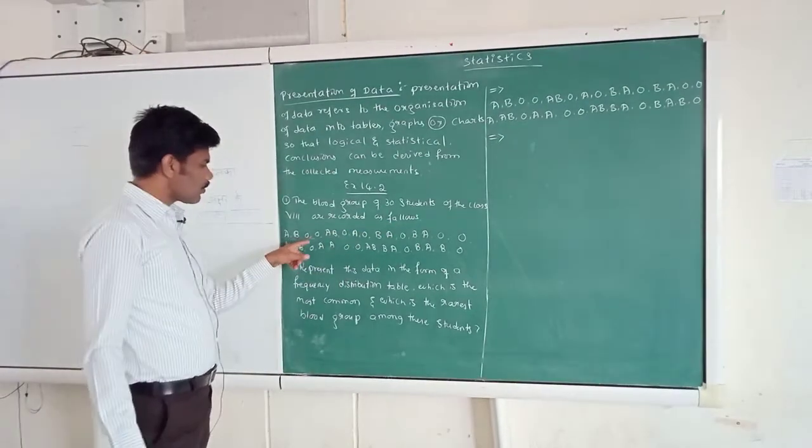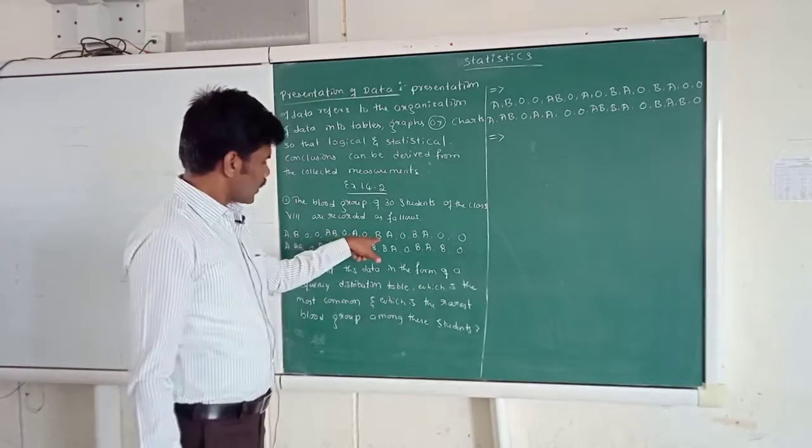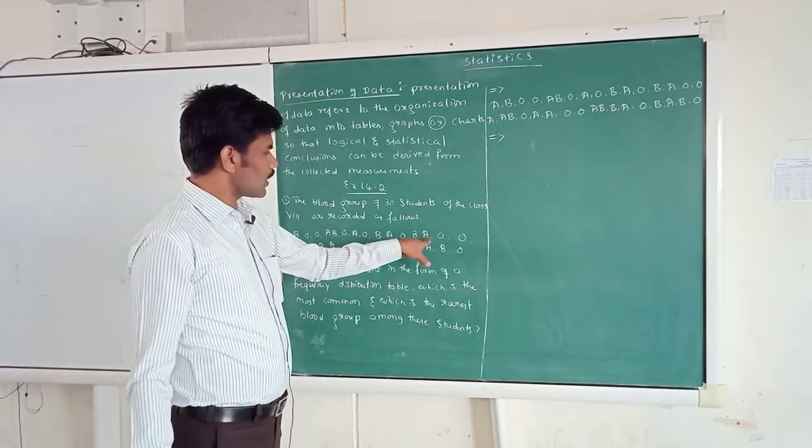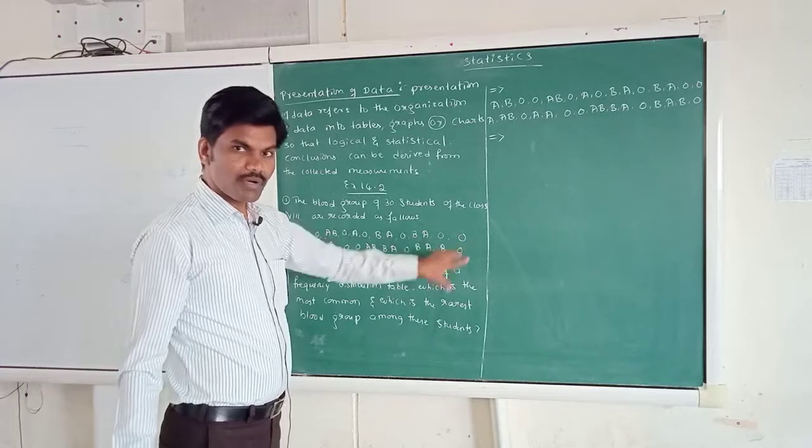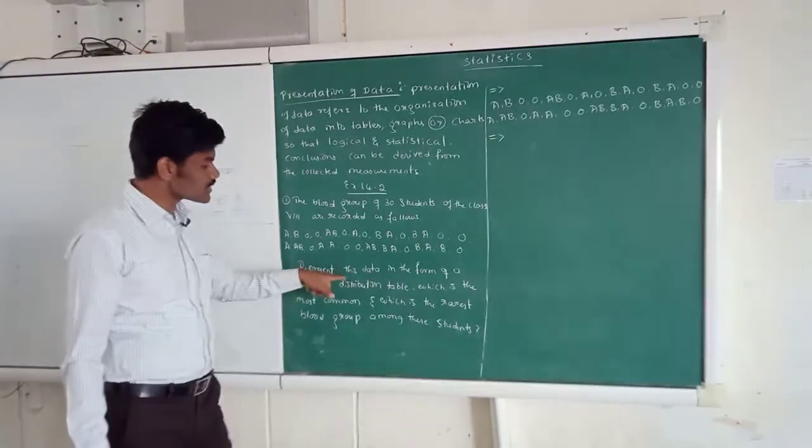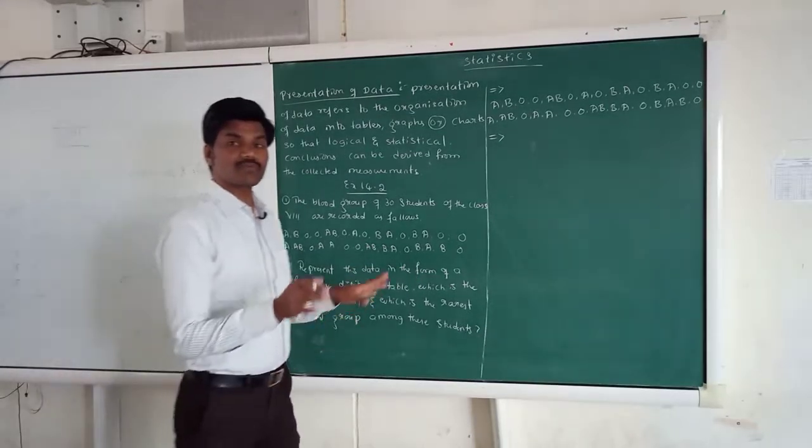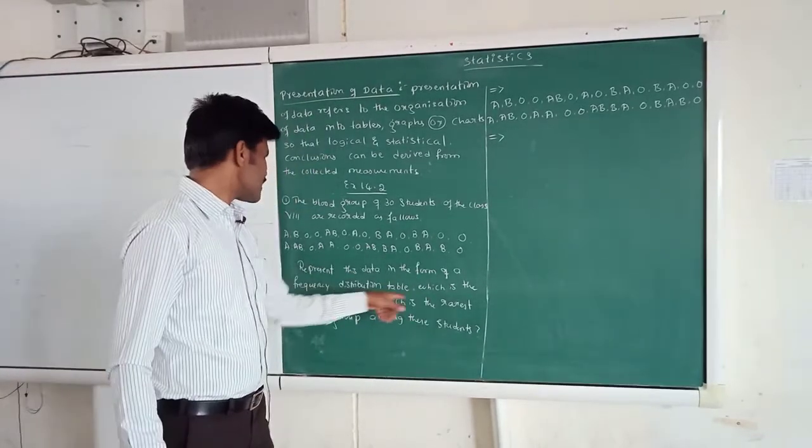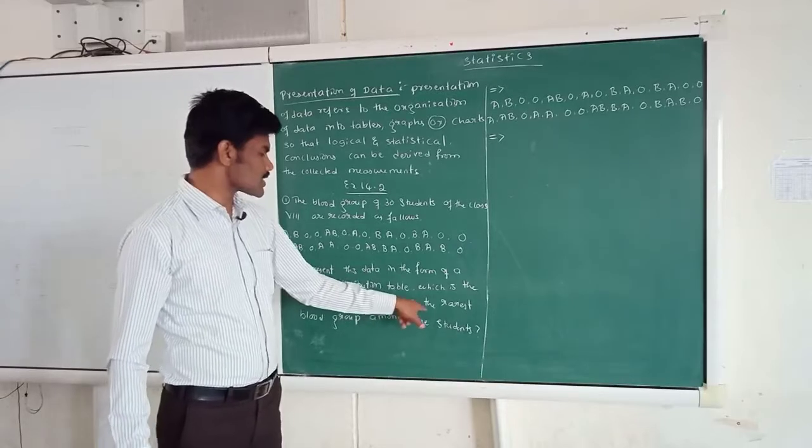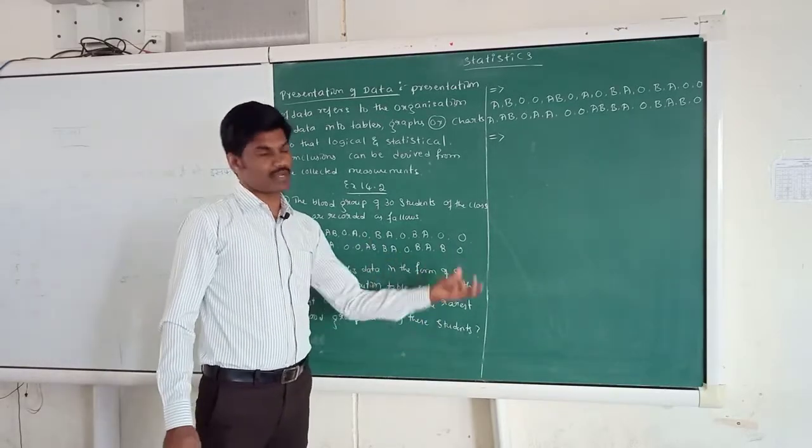So what is that? The blood group of 10 students of class 8 are recorded as follows: A, B, O, O, A, B, O, A, O, B, A, O, B, A, O, B, A, O, O. This type of blood groups are there for the 10 students. And we present this data in the form of a frequency distribution table. Which is the most common and which is the rarest blood group among these students we need to find out.